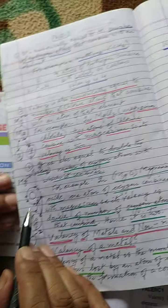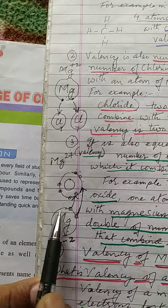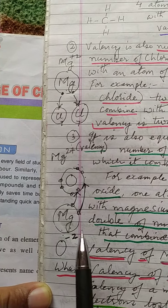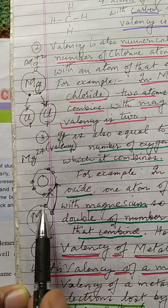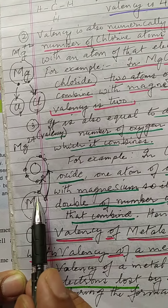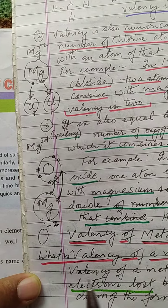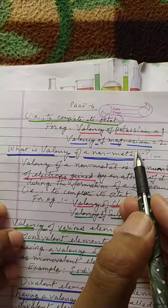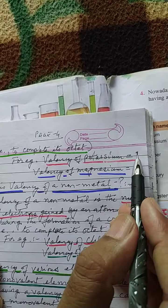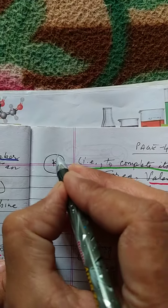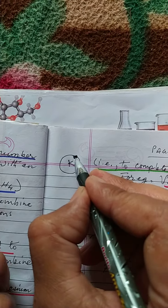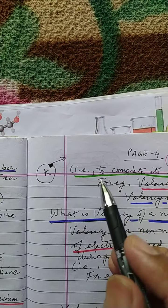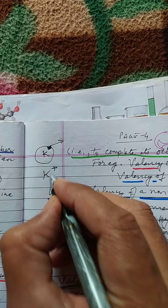Magnesium is ready to lose its two electrons. When the atom of magnesium loses its two electrons, it becomes a positively charged ion or a cation. Potassium has one electron in its outermost shell which it loses, so it gains a valency of one.